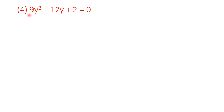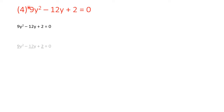So our duty is to remove this 9 from the equation. Whenever we have to remove anything which is multiplied with the variable, we just divide the entire equation by the same number. So when we have 9y squared minus 12y plus 2, we divide it by 9. As a result 9 and 9 disappear. 12 and 9 are divisible by 3, whereas 2 and 9 are not divisible.